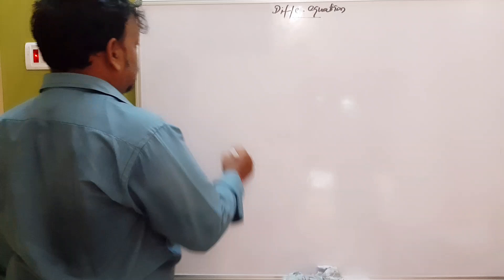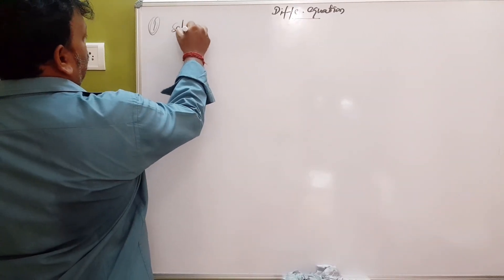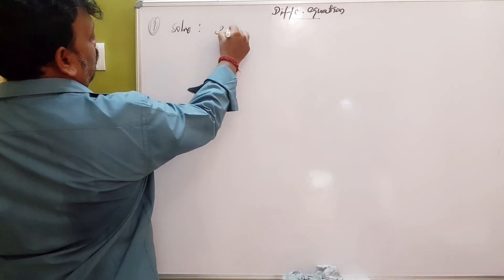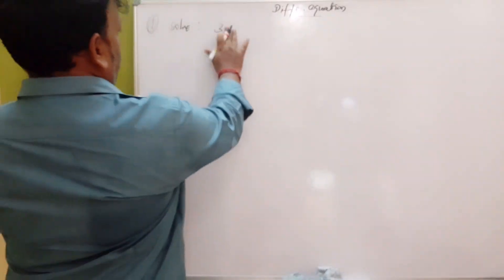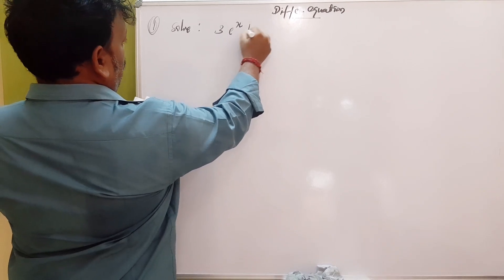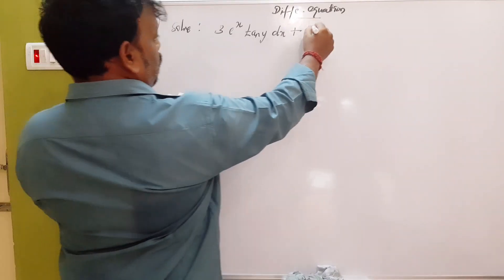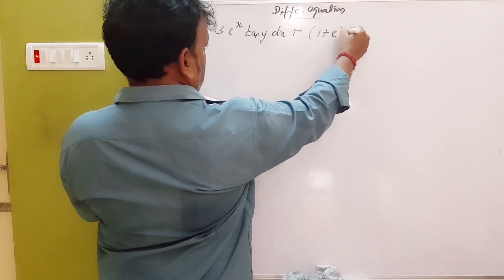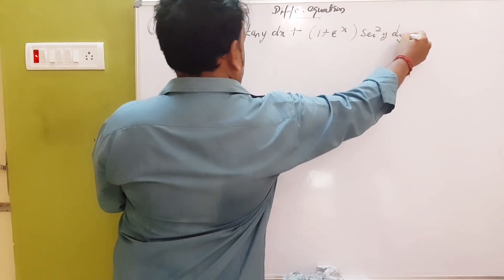Consider the equation: 3 times e to the power x times tan y, dx, plus 1 plus e to the power x times sec squared y, dy equals 0. Solve.